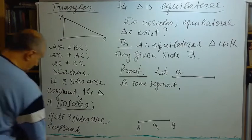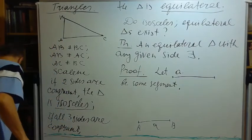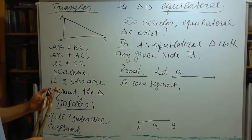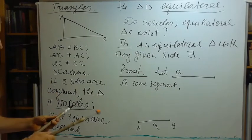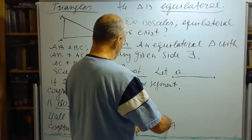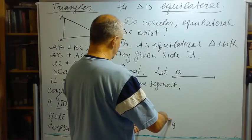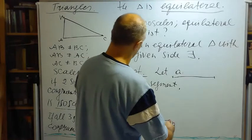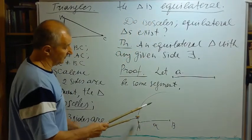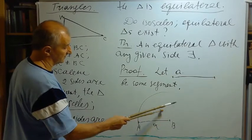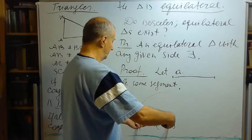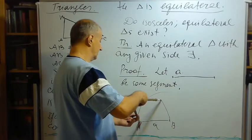Then I will take a compass, which exists according to our compass postulate, and from point B I will draw an arc of radius AB. I will draw this arc, so every point on this arc lies at the distance A from point B. Now from point A, I will draw an arc of radius AB.